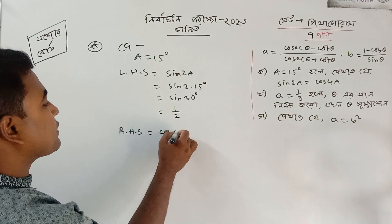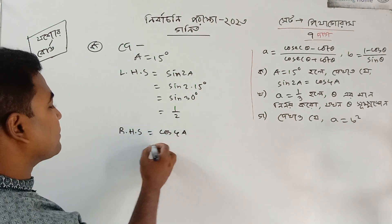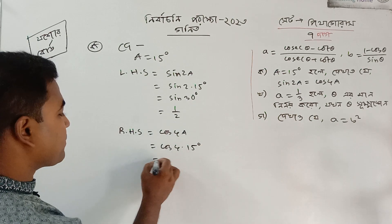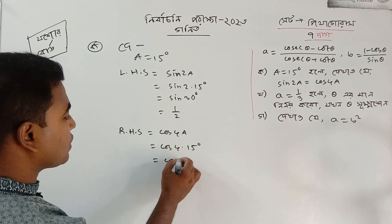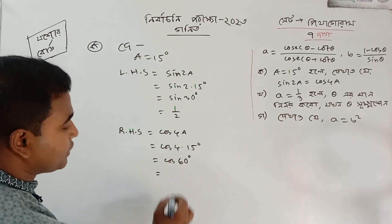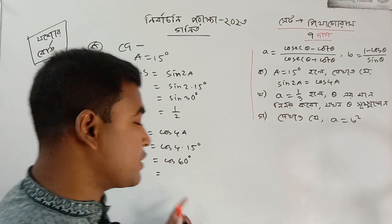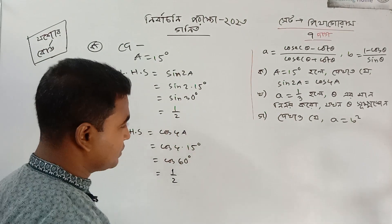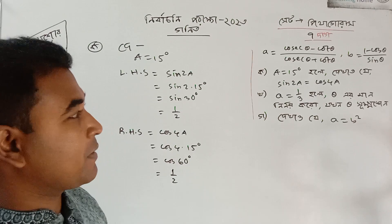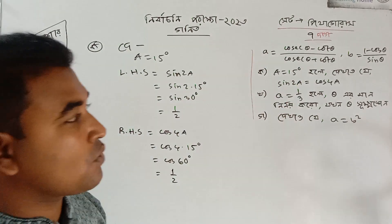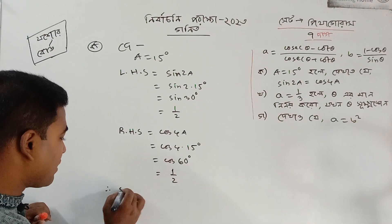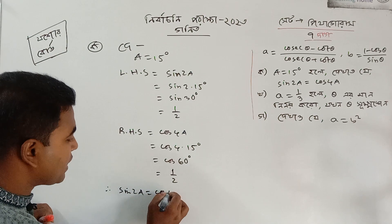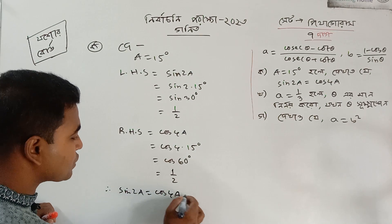On the right-hand side, cos 4a. This is 15 degrees. What degree? Cos 60 degrees equals 1 by 2. So we can see that sin 2a is equal to cos 4a.